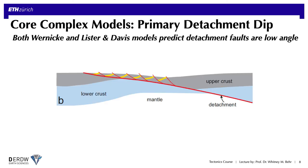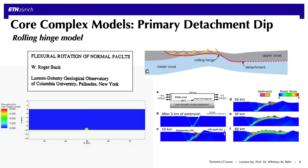Coming to the question of the original dip of the detachment fault while it was active, both the Wernicke and Lister-and-Davis models predict that detachment faults are active at low angles. We'll discuss in the next mini-lecture why many people argue against this and why it's considered a tectonic conundrum. To get around this problem, some workers have proposed the rolling hinge model, in which the detachment changes its dip from steep to shallow in a hinge-like geometry and only actively slips along the steep section, while the shallow section is essentially passive.